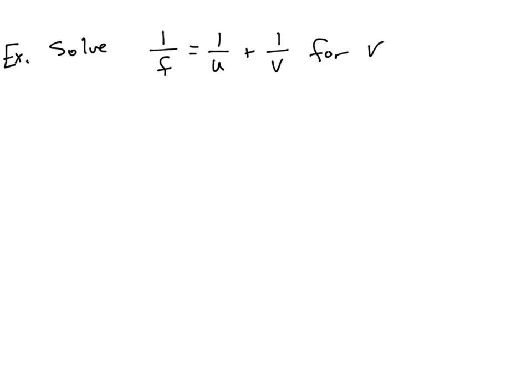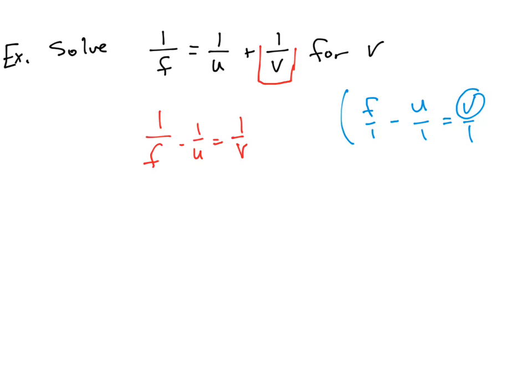Now let's solve 1 over f equals 1 over u plus 1 over v for v. We isolate the 1/v term first: 1 over f minus 1 over u equals 1 over v. It's tempting to just flip each fraction to get f minus u equals v, but this is not precisely true.